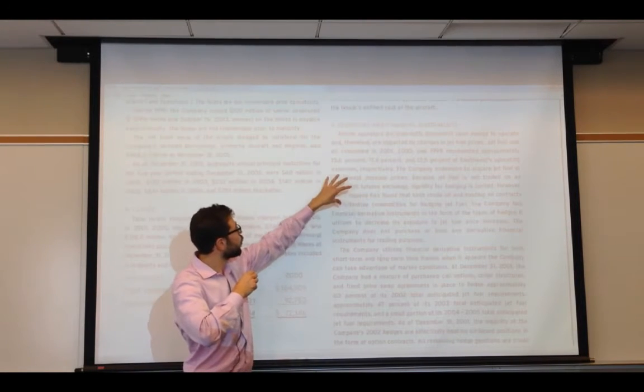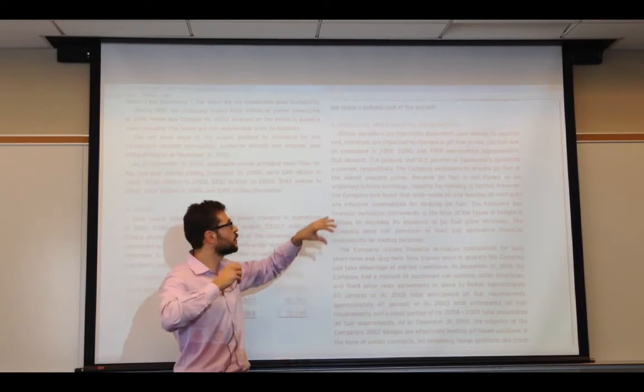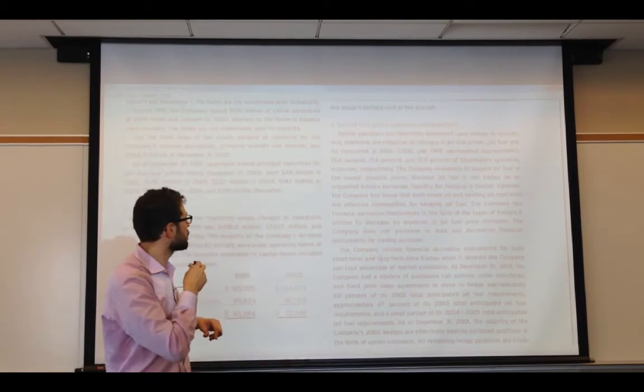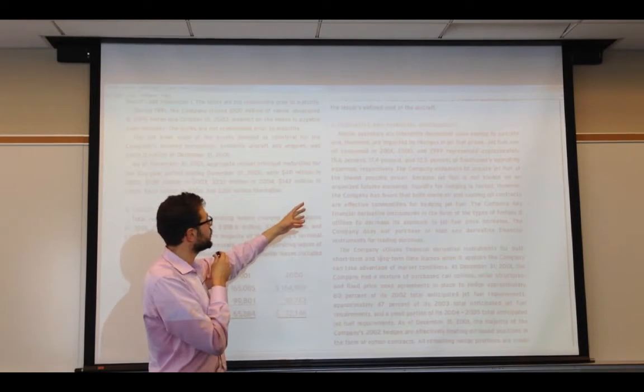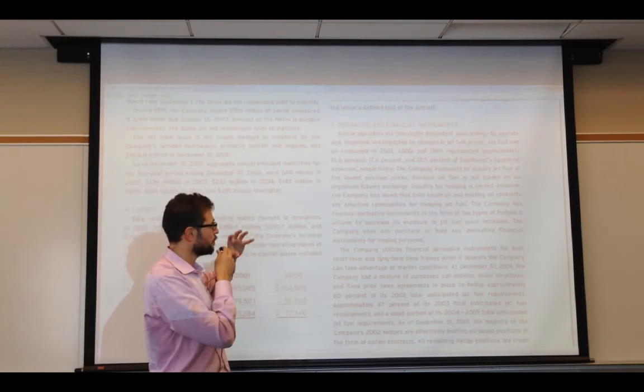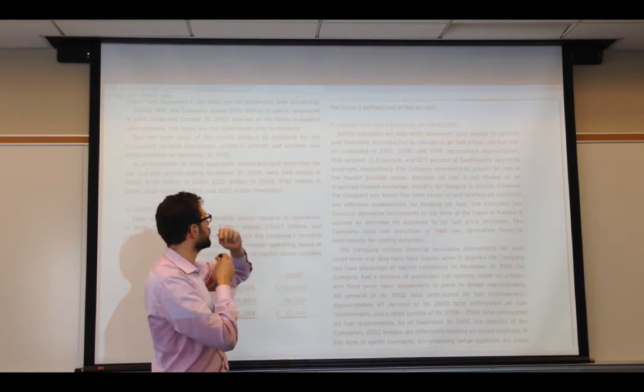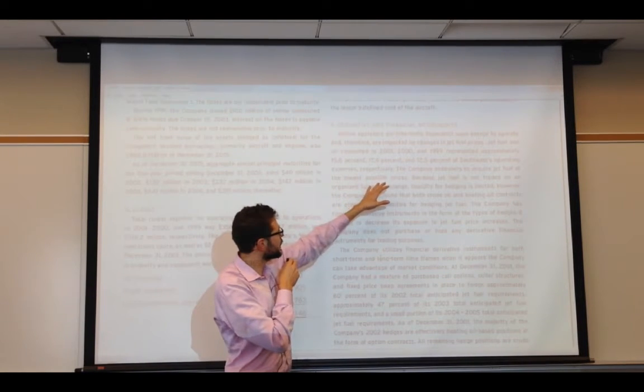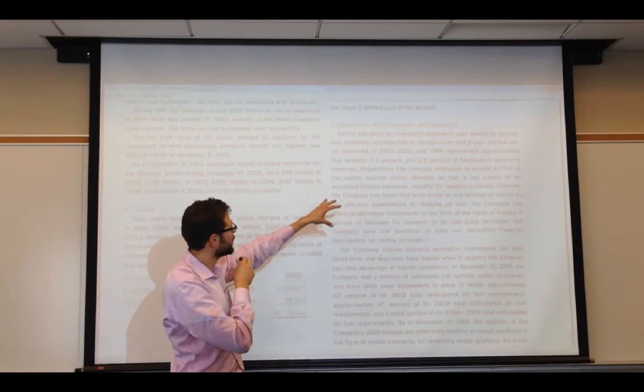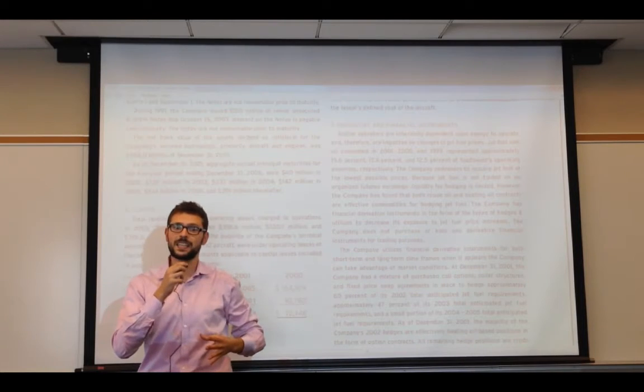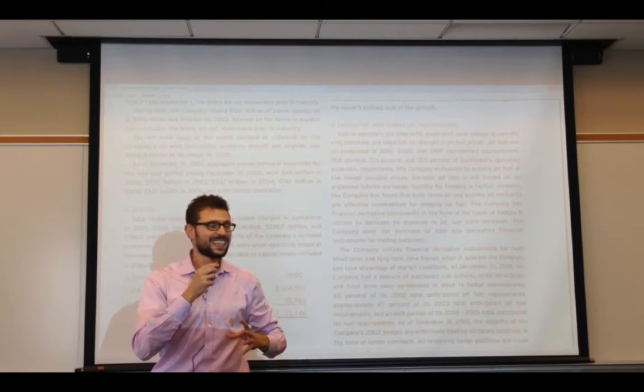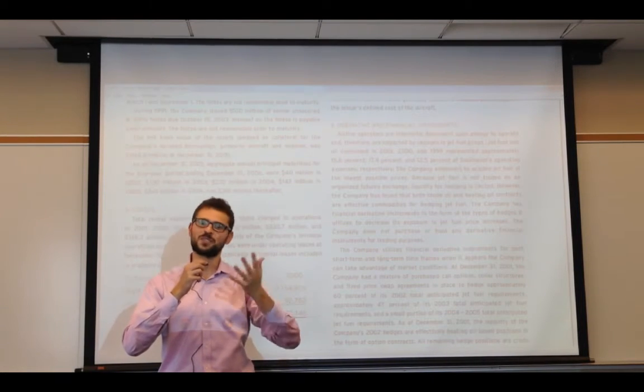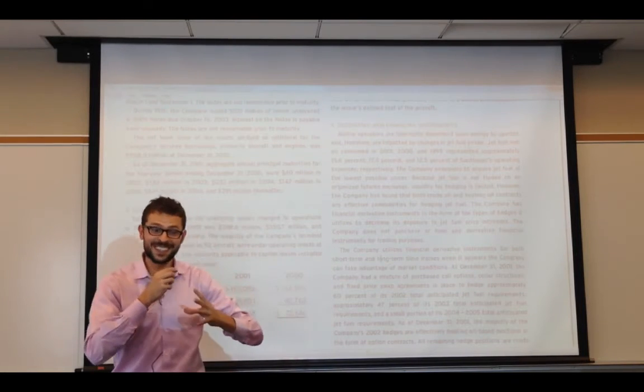So the questions are accounting research questions designed for you to accumulate enough data so that you're able to make a determination of what was the impact of the hedge on the business. So to go through that accounting research, we really have to zoom in 100% on the footnote number nine in the financial statement. So footnote number nine, and we'll start reading it, airline operators are inherently dependent upon energy to operate and therefore are impacted by the changes in jet fuel prices. Jet fuel and oil consumed in 2001, 2000, and 1999 represent approximately 15.6%, 17.4%, and 12.5% of Southwest operating expenses respectively.